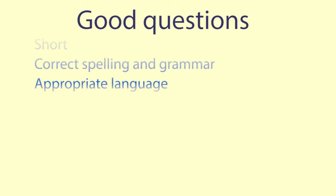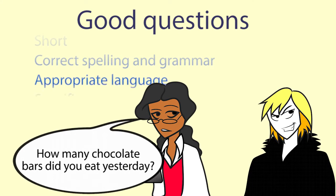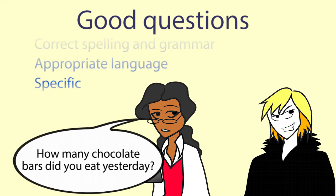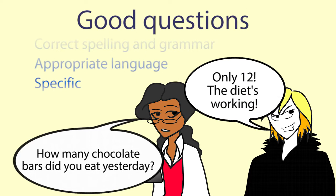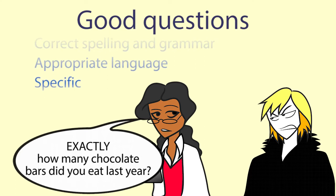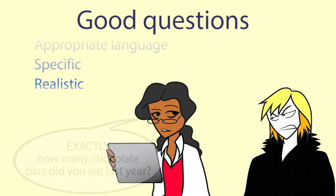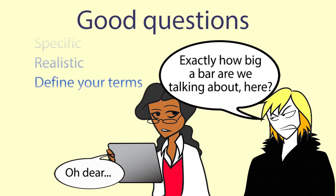It is usually better to ask what a person did in a certain instance or over a certain period of time than for them to recall in general what happens. But you need to be realistic about what you can expect people to remember. And you need to define your terms.